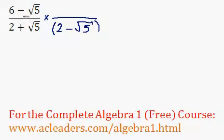We have to just multiply whatever we have down at the denominator with the middle signal switched. And up top, I'm also going to have the same thing, 2 minus root 5.